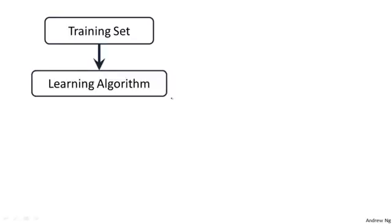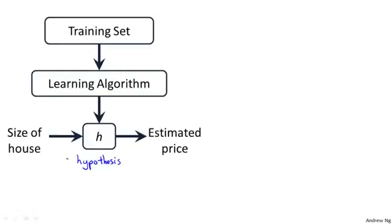We've defined what a training set is, and so here's how a supervised learning algorithm works. We saw it with a training set, like our training set of housing prices, and we feed that to our learning algorithm. It's the job of a learning algorithm to then output a function, which by convention is usually denoted with lowercase h, and h stands for hypothesis. And what the job of the hypothesis is, is a function that takes as input the size of a house, like maybe the size of a new house that your friend is trying to sell. So it takes in a new value of x, and it tries to output the estimated value of y for the corresponding house. So h is a function that maps from x's to y's.